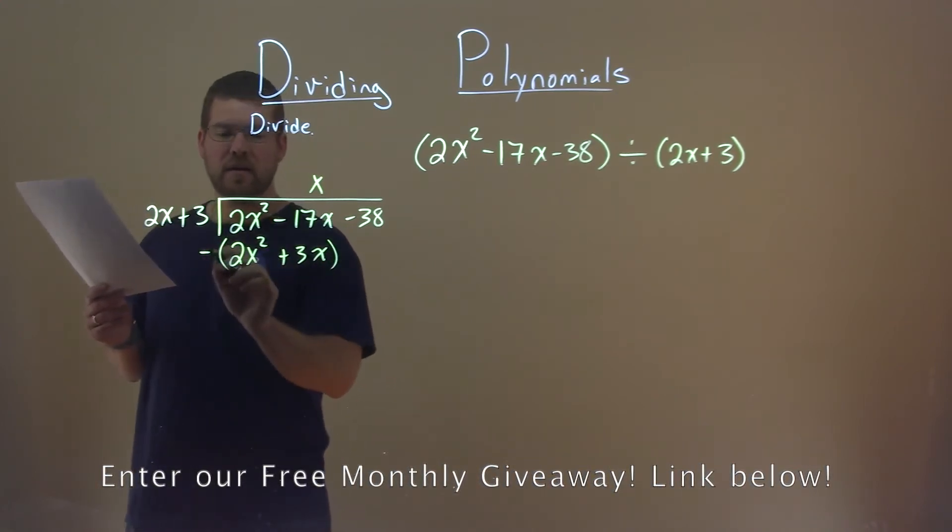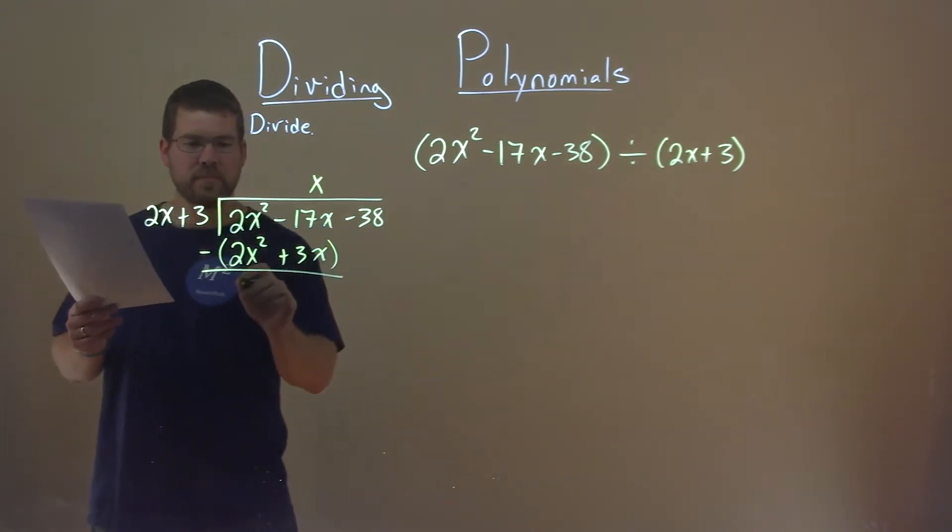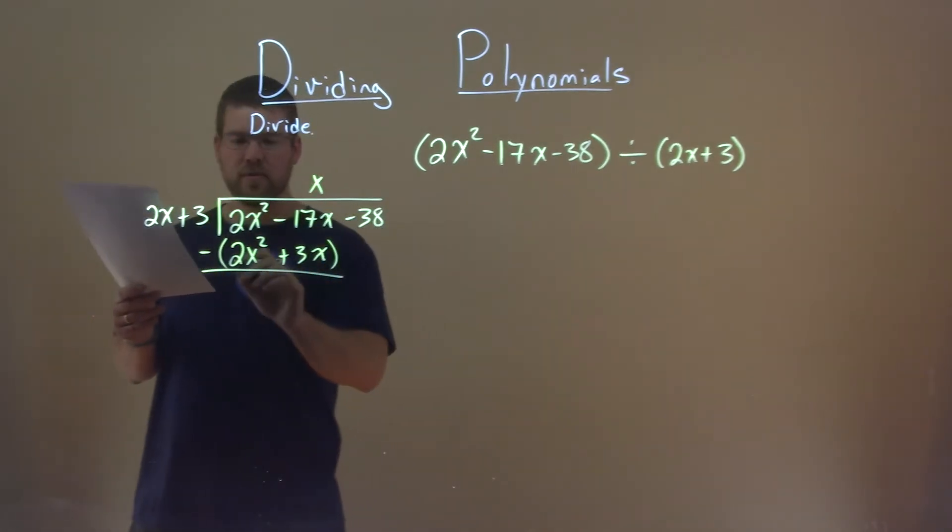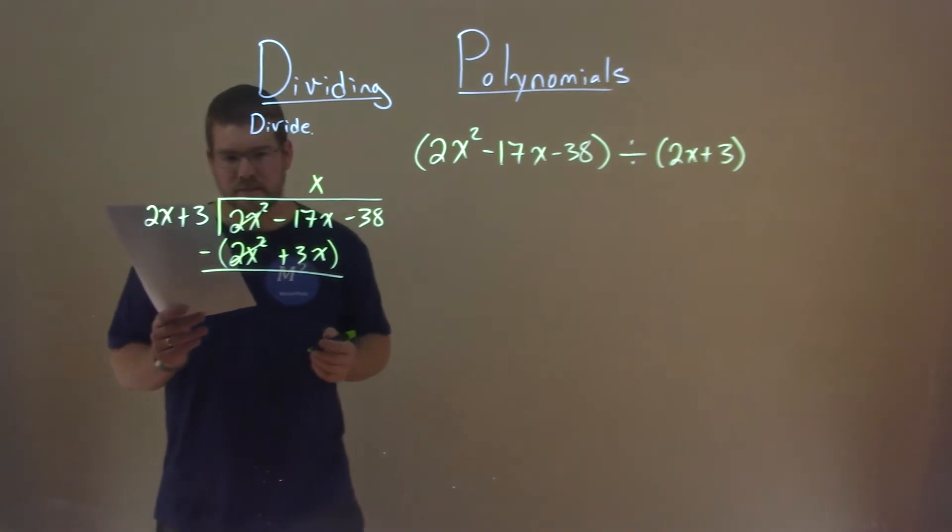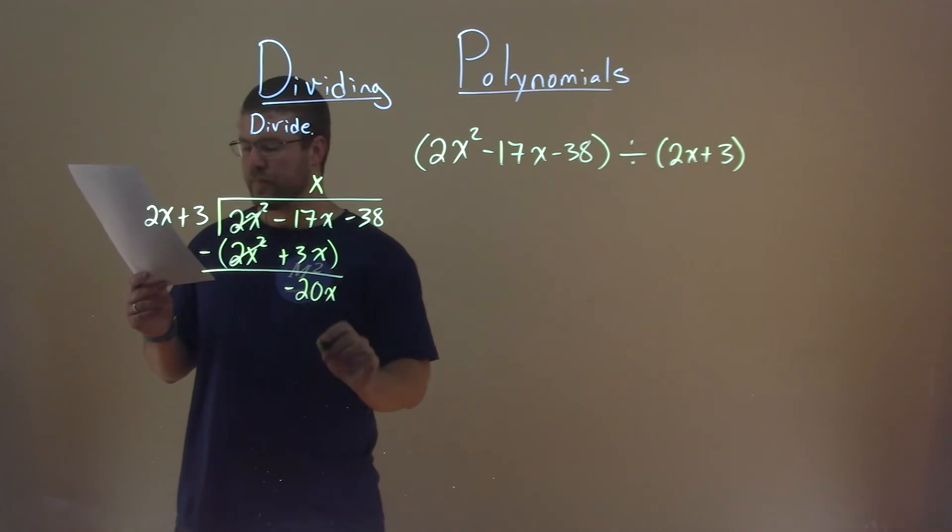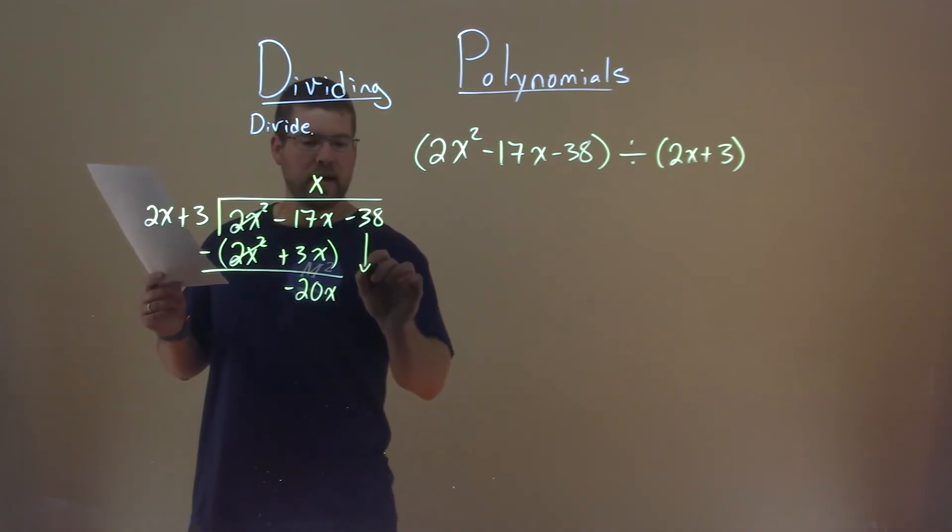We're now going to take all that and subtract down from up top. 2x squareds cancel, and that was the whole point of setting that up. Negative 17x plus 3x is negative 20x. We're now going to bring down the negative 38, and we're going to do this process again.